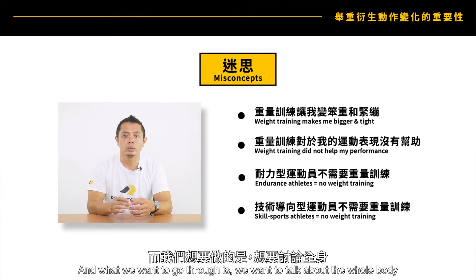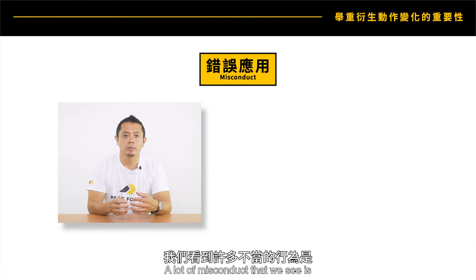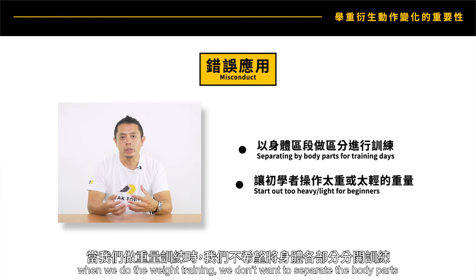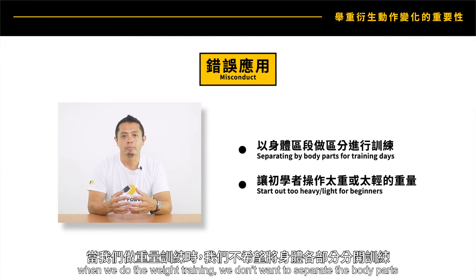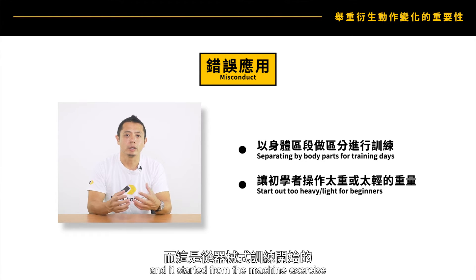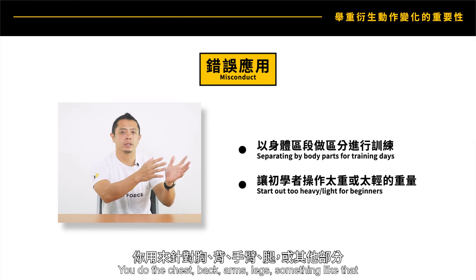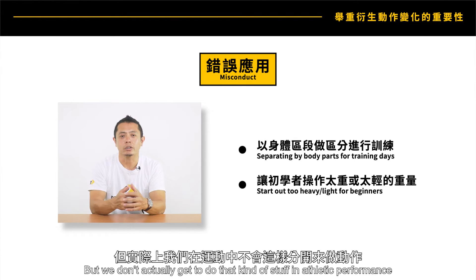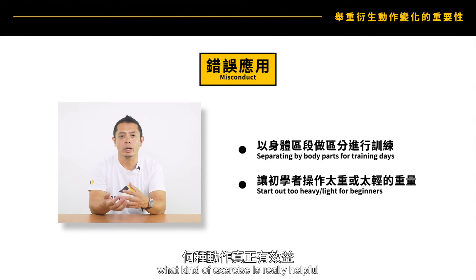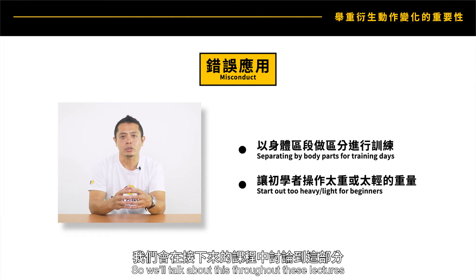What we want to go through is the whole body approach, and also the progression. A common misconduct is separating weight training into individual body parts, which is very common in the fitness and health world. This started from machine-based circuit training — chest, back, arms, legs. But in athletic performance we don't do that. We have to be careful about what exercises are truly helpful and what intensity is appropriate to begin with.